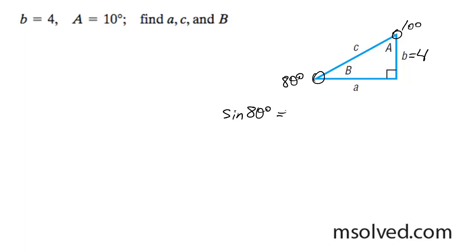So sine of 80 is equal to 4 over C, and if I solve for C in this case, I'm going to get, so I solved for C in this case, and what I ended up with getting was 4.06.